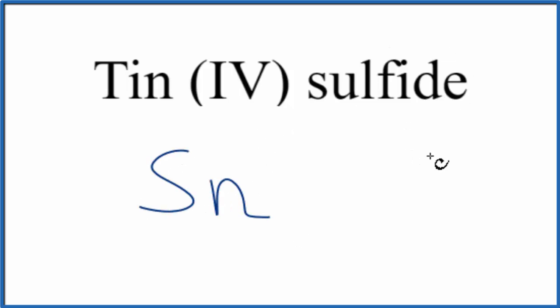And then sulfide, that comes from sulfur, so we'll write S. Because tin is a transition metal and sulfur is a non-metal, this is an ionic compound.